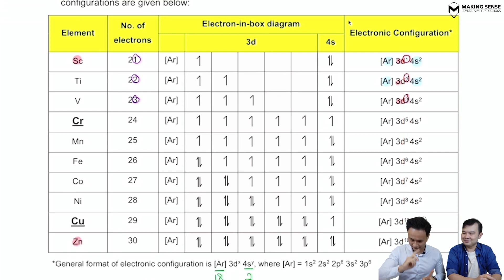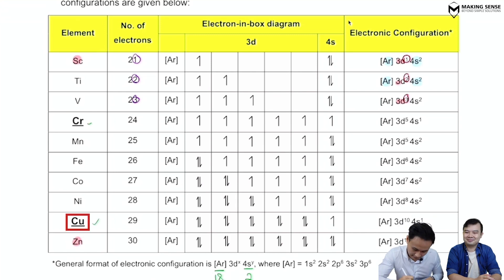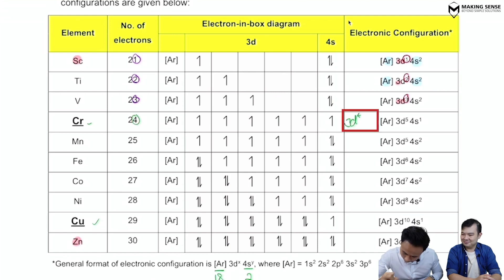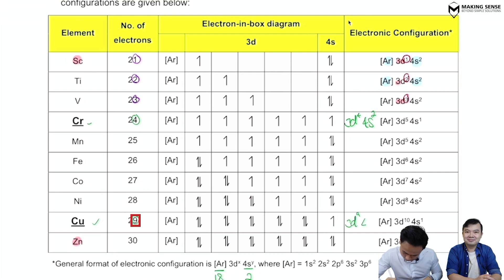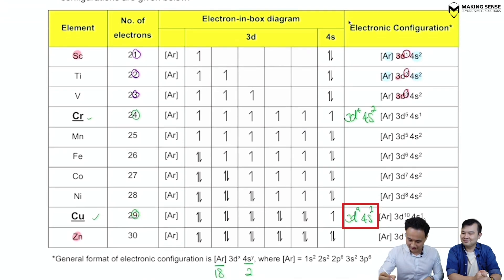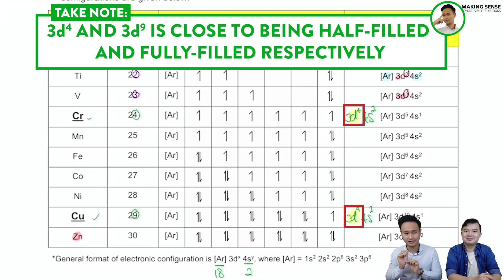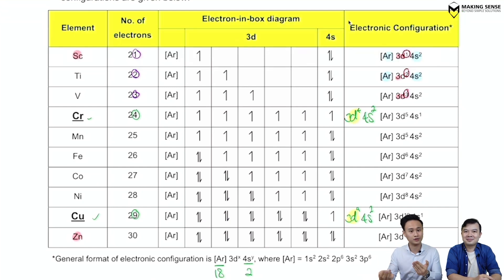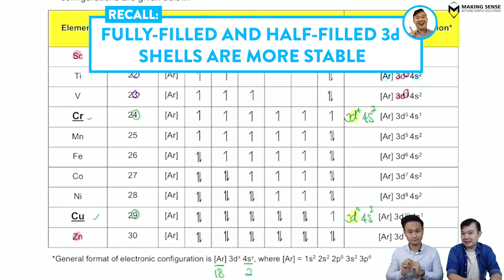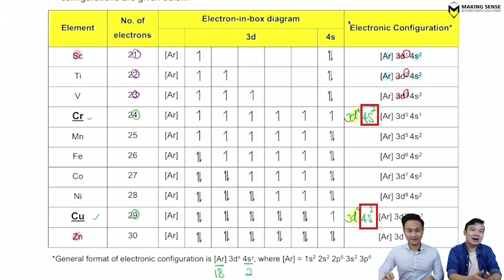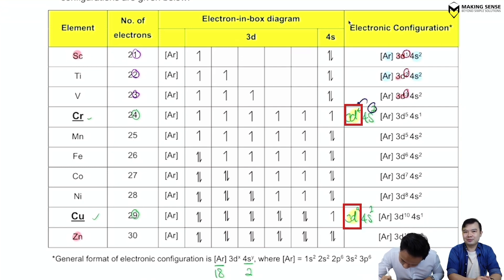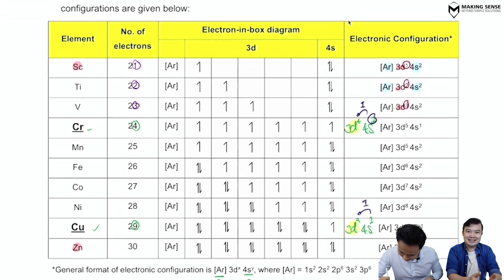Two elements you need to take note of are chromium and copper. Applying the shortcut: for chromium the second digit is 4, giving 3d4 and 4s2. For copper the second digit is 9, giving 3d9 and 4s2. But 3d4 and 3d9 are so close to half-filled and fully-filled configurations, which are more stable than expected. So one 4s electron is demoted to 3d, making chromium 3d5 4s1 and copper 3d10 4s1 — the more stable ground state configurations.